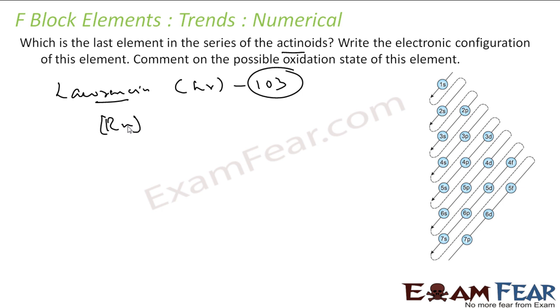The electronic configuration will be 5f14, 6d1, 7s2. This is the electronic configuration of Lawrencium. What about the possible oxidation state? If it loses 3 electrons, it will attain the stable configuration, so plus 3 is the most common oxidation state for Lawrencium.